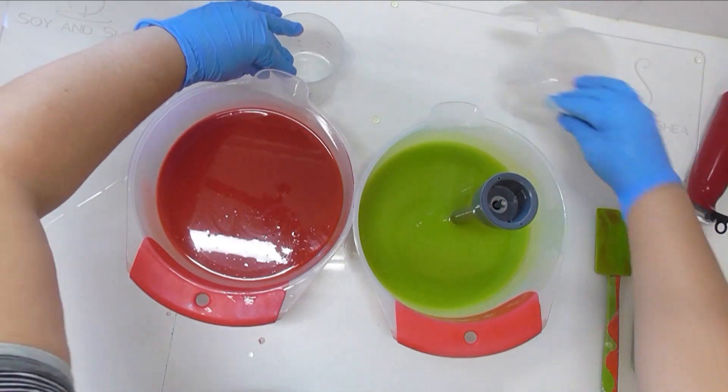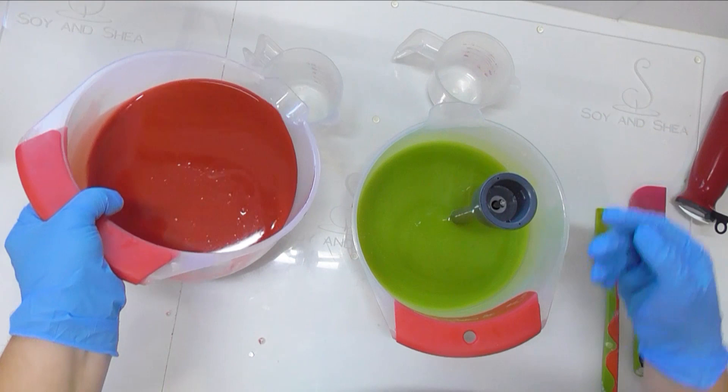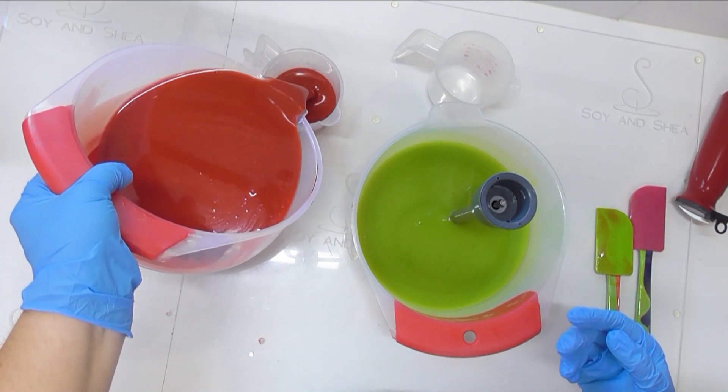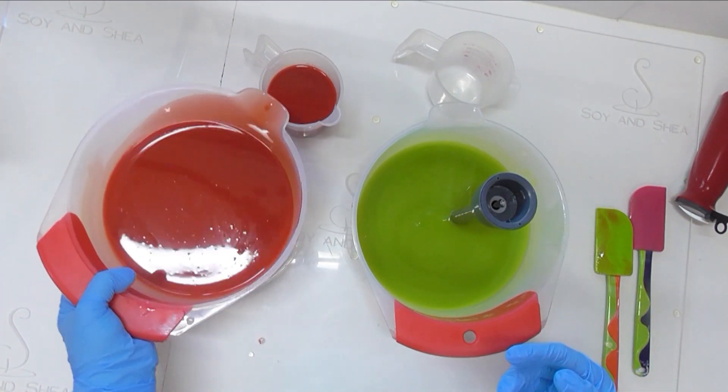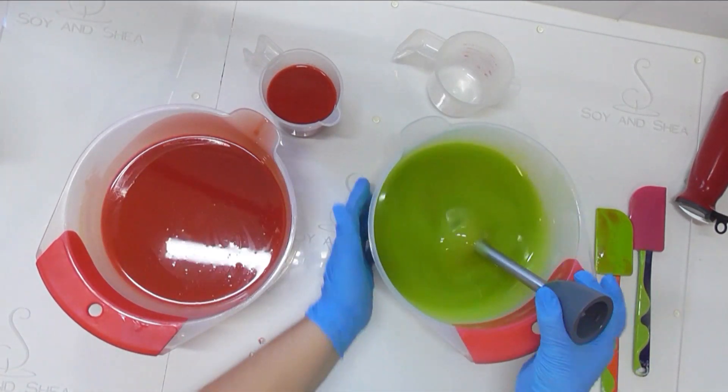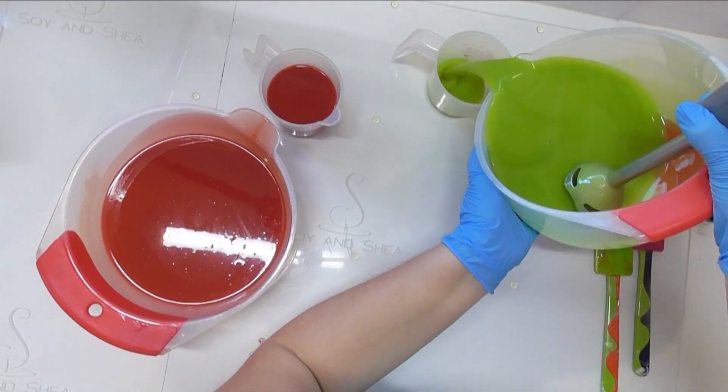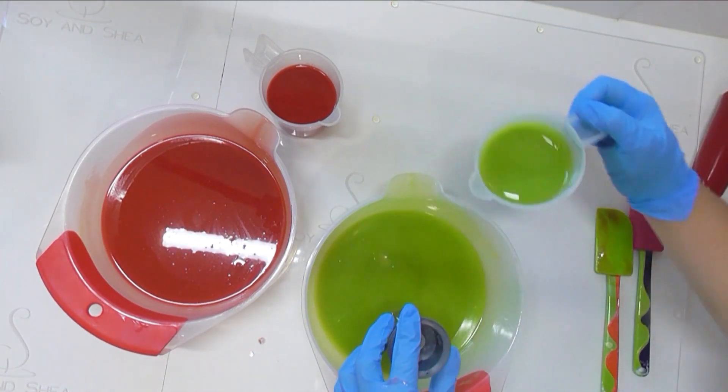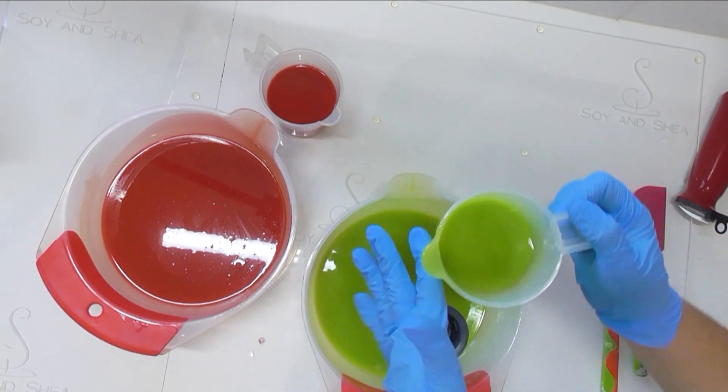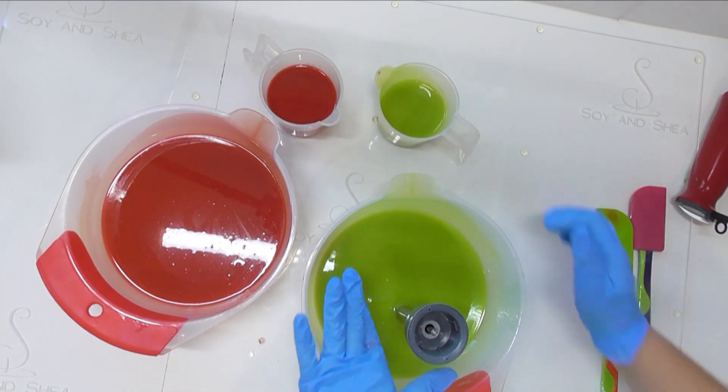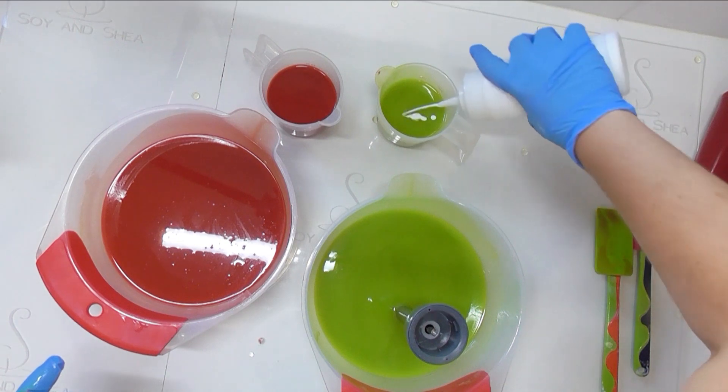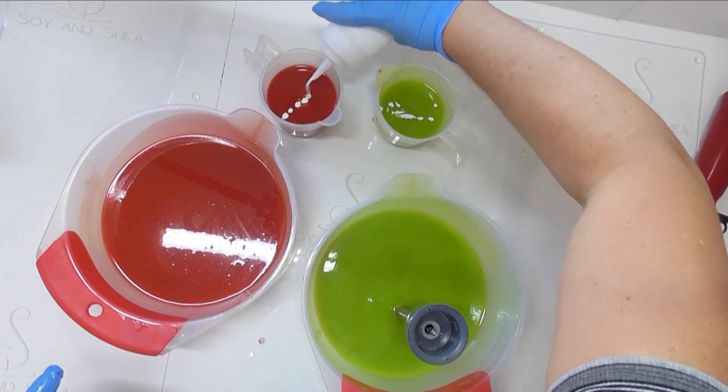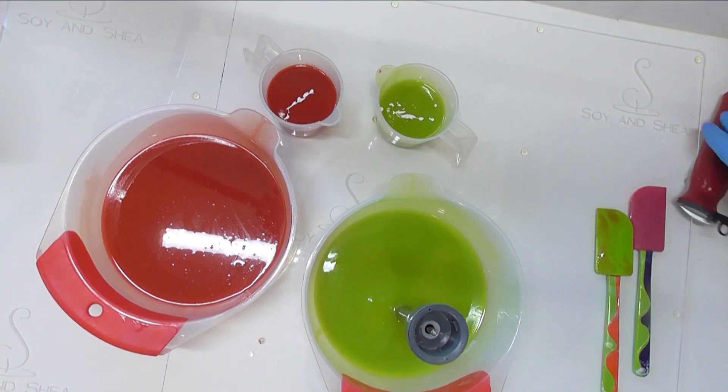Alright, what we're going to do with both of these colors now is I'm going to split some of this red off into this jug here, and I'm also going to split off a bit of this green into this one about the same sort of amount. To these smaller jugs what I'm going to do is just add in a touch of titanium dioxide just to lighten them up, and I'm just going to give all of these a very quick mix with the stick blender.